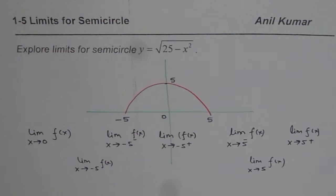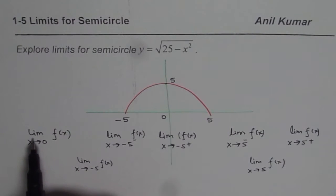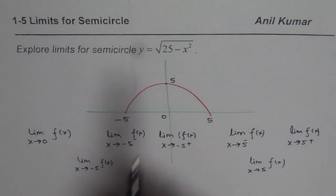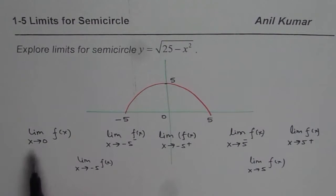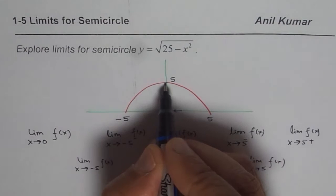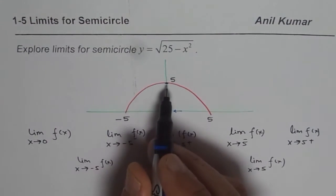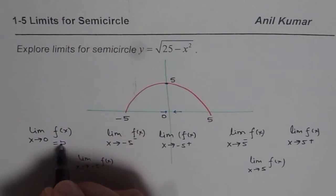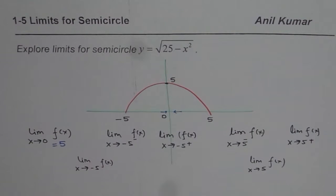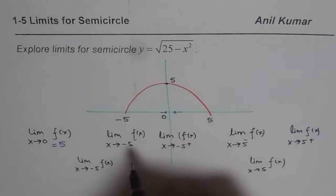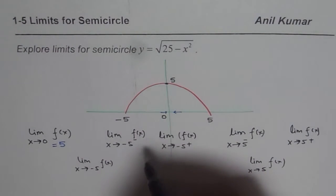Some of you can pause the video, answer the question and check with my solution. When we say limit of the function √(25 - x²) when x approaches 0, you are approaching 0 from the left side or from the right side, and you actually approach this point where the value is 5. So this answer is equal to 5. Both sides it is the same value. You also see that the function is continuous at this point and it should be 5.